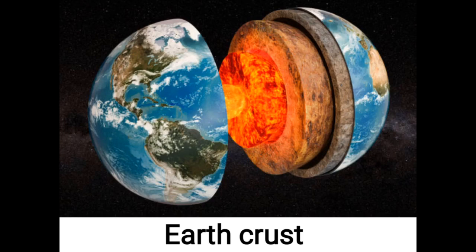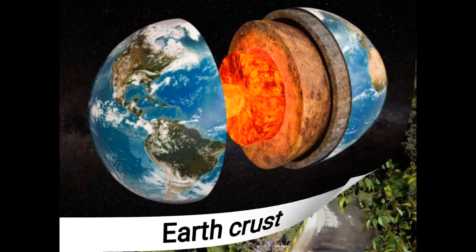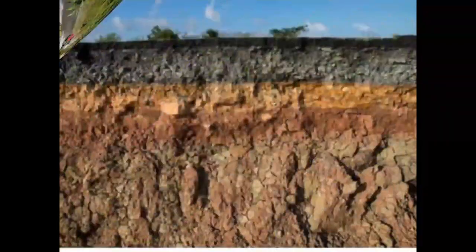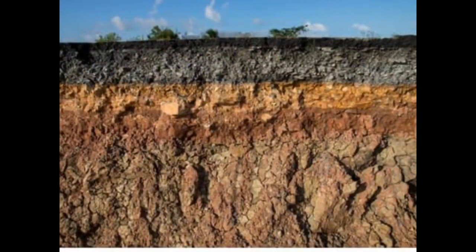The earth crust is the upper layer of the Earth. Earth crust is hard and it is mainly made up of rock. When we travel in a hilly region, we see layers of soil and rocks along the roadside.